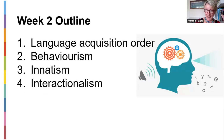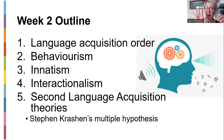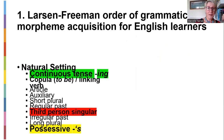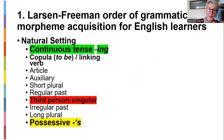Behaviorism, innatism, and interactionism are all covered in chapter four of Ferreira. We'll finish with Krashen's second language acquisition theories — his five hypotheses on how we acquire a second language. Larsen-Freeman is quite a notable literacy theorist. She describes the natural order of grammatical morpheme acquisition when learning English in a natural home setting, from childhood through to school.